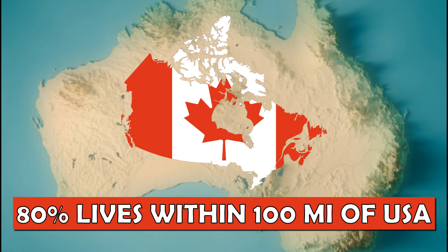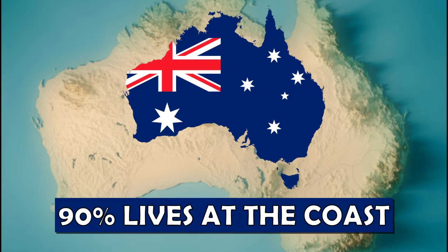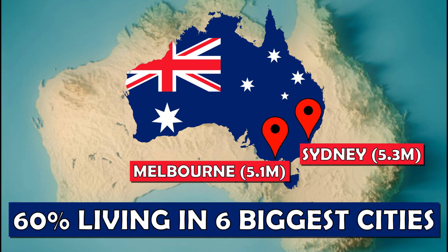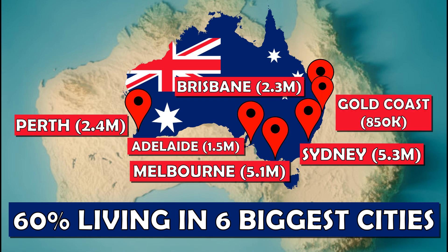In Canada, 80% of the population lives within 100 miles of the US border. Australia is kind of the same, having at least 90% of the population living at the coast, and 60% living in the six biggest cities: Sydney, Melbourne, Brisbane, Perth, Adelaide, and Gold Coast.